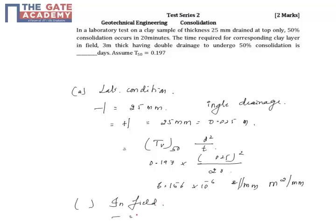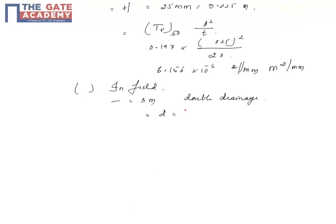H is equal to 3 meters. As it is double drainage, d is equal to H over 2.